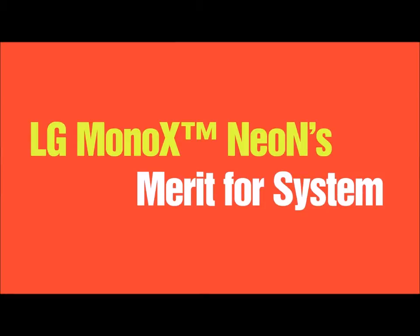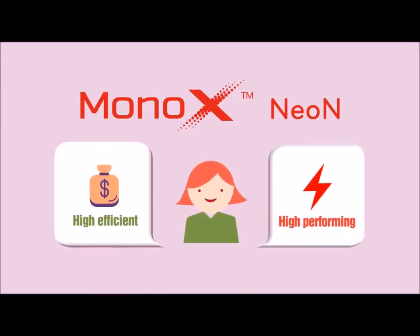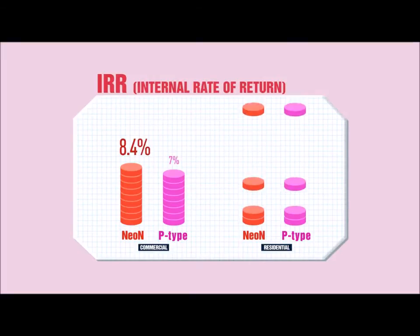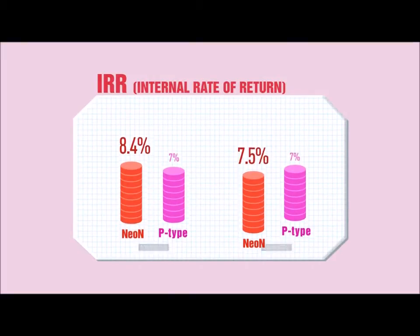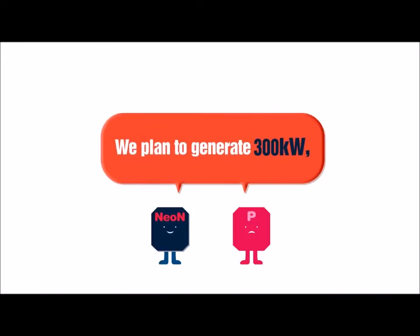Neon's merit for system. Based on these advantages of highly efficient and high-performing LG Mono X Neon, our customers can reduce the installation costs and increase the generation rate. For example, we plan to generate 300 kilowatts. Based on this, the normal P-type requires 1,200 modules.